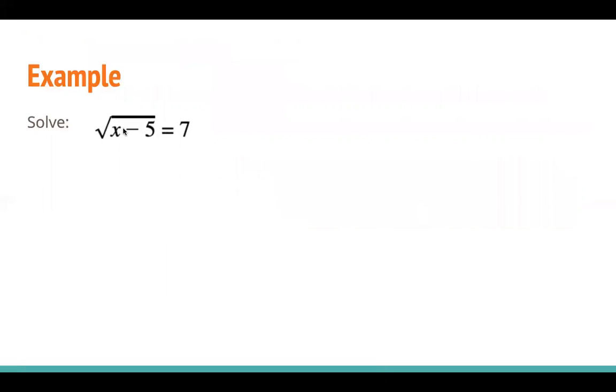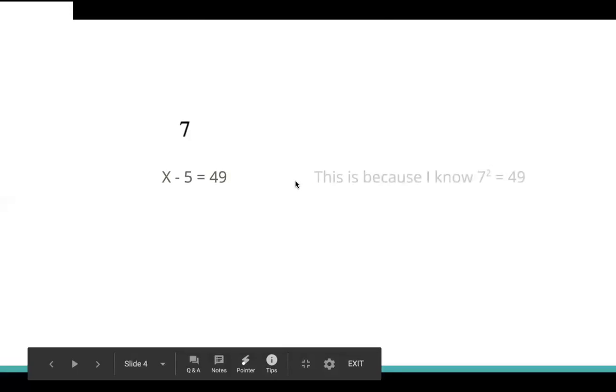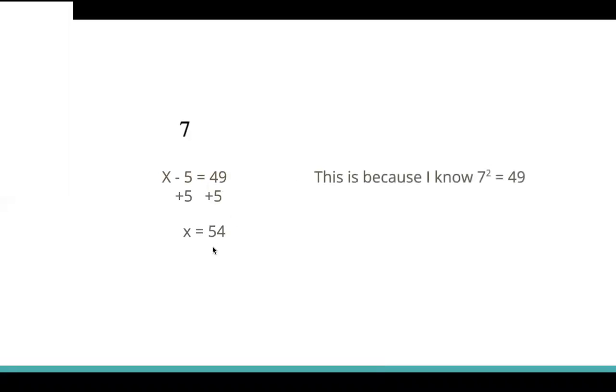Let's look at one more example. Here I have the equation square root of x minus 5 equals 7. That means that x minus 5 equals 49, whether I think of squaring both sides or just because I know that 7 squared is 49. Then I add 5 to both sides and my answer is 54. So then if I look, if I plug that in, 54 minus 5 is 49. Square root of 49 is 7, so that works.